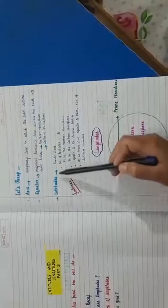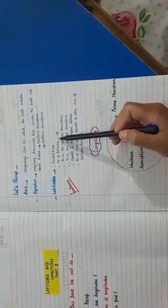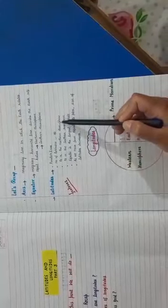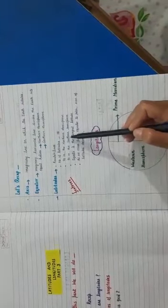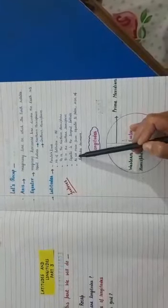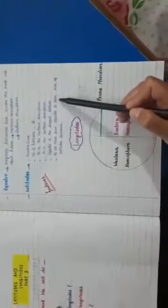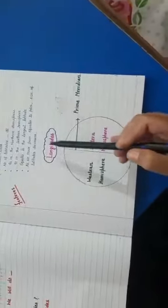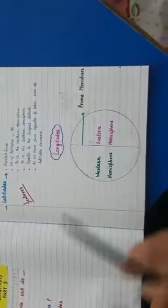Latitudes are parallel lines. Number of latitudes: 181. 90 in the Northern Hemisphere, 90 in the Southern Hemisphere. The Equator is the longest latitude. As we move from the Equator to the poles, the size of latitudes decreases. Now today we will read about longitudes.